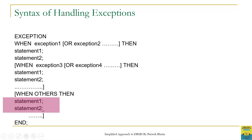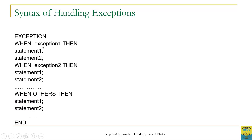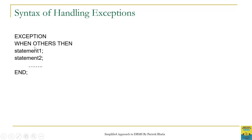Let us consider some examples to understand this. In this example we have two exception handlers: one for exception one and another for exception two. If during runtime exception one is raised, it will be handled by its group of statements. If exception two is raised, it will be handled by its group of statements. When the raised exception is neither exception one nor exception two, those runtime errors will be handled by the OTHERS exception handler. It is also possible to use only the OTHERS handler, in which case all runtime errors will be handled by that group of statements.